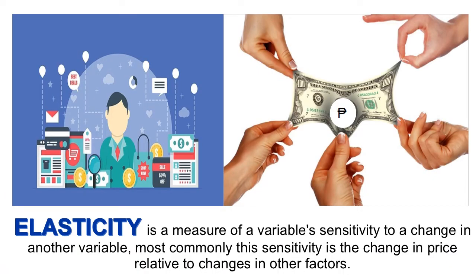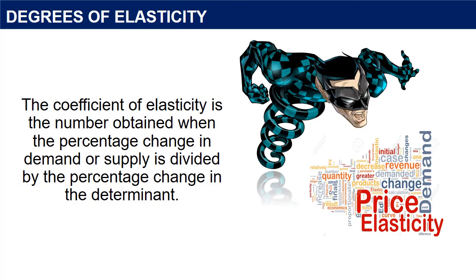We have discussed how demand and supply respond to changes in their determinants. This module discusses the responsiveness of consumers and producers to changes in the market conditions, which is referred to as elasticity. Elasticity is a measure of a variable's sensitivity to a change in another variable; most commonly, this sensitivity is the change in price relative to changes in other factors. The coefficient of elasticity is the number obtained when the percentage change in demand or supply is divided by the percentage change in the determinant.